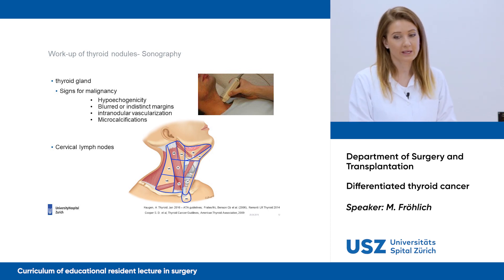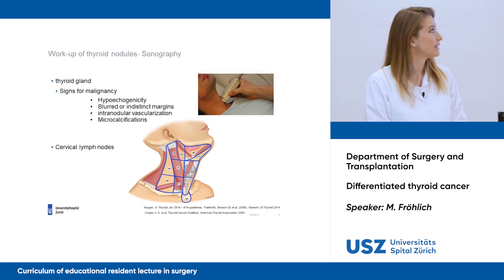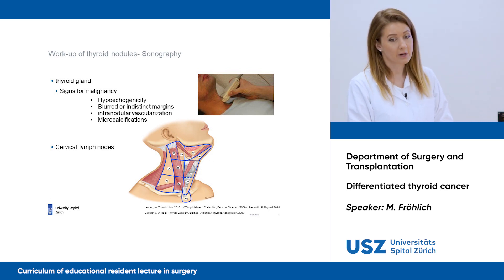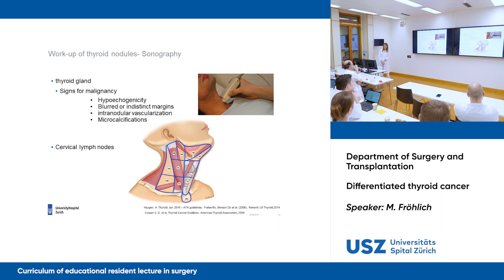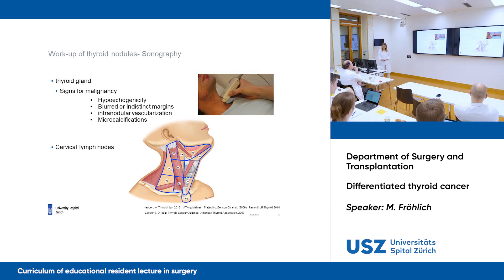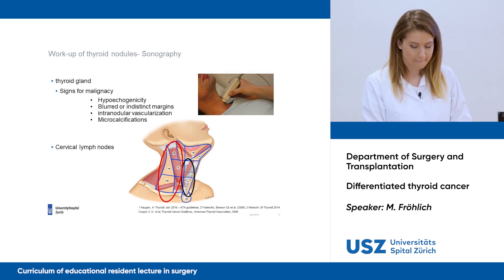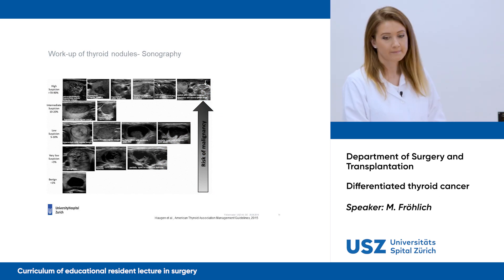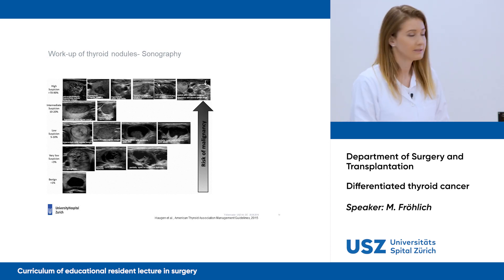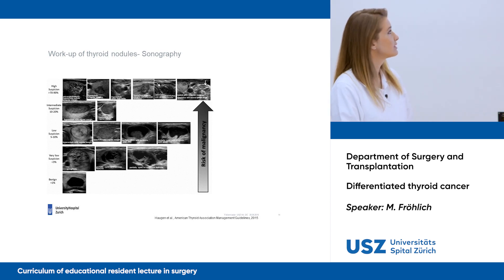Ultrasound should be performed in all patients with a suspected thyroid nodule. It answers questions about the anatomy of the thyroid gland and has established some signs for malignancy — for example, hypoechogenicity, poorly restricted margins, intranodular vascularization, or microcalcification. It also shows us the status of cervical lymph nodes, which can be divided into subregions and summarized into central and lateral lymph nodes. So now, we have our ultrasound findings, which give us information on the level of malignancy suspicion.